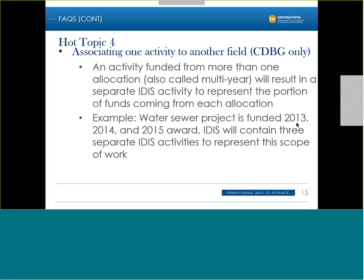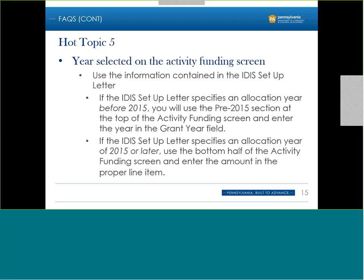One extra note: if you're charging program delivery costs, make sure you associate those costs with the proper allocation year, especially when you have three different activities. You want to keep those budgets aligned with the allocation from which they're supposed to come.